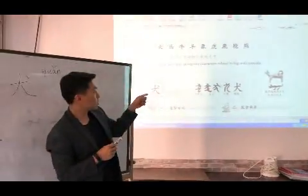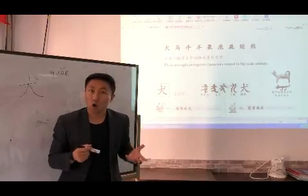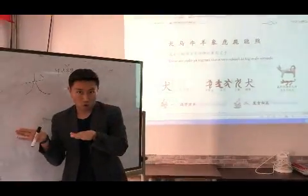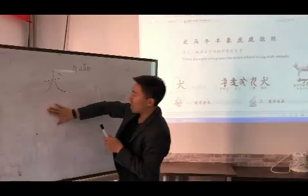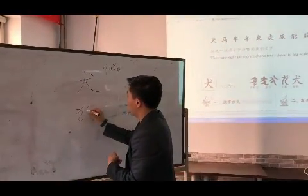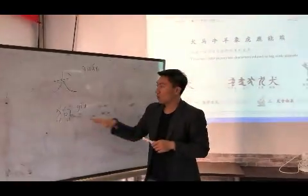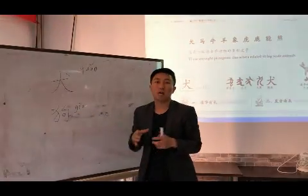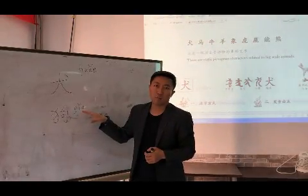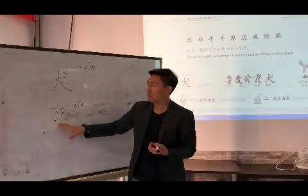But probably you've heard that Chinese people don't say 犬 too much. They always say 狗 — 狗 means dog. For example, we say 小狗, meaning little dog. So basically, 犬 means dog and 狗 also means dog. 犬 is used more in written language, while 狗 is used more in conversational daily dialogue. So you'll say 狗 more often.